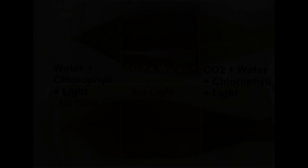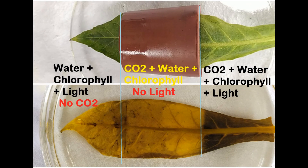Here's why. The portion of the leaf exposed to the outside receives all the conditions essential for photosynthesis to occur. It receives water from the soil in the pot, carbon dioxide from the air, and light from the sun, in addition to the chlorophyll already present in the leaf. Hence, it carries out photosynthesis unhindered and therefore tests positive for starch. The portion of the leaf in between the split cork contains chlorophyll and receives water from the plant but is devoid of carbon dioxide and light from the sun. It is therefore robbed of its ability to carry out photosynthesis and consequently tests negative for starch.